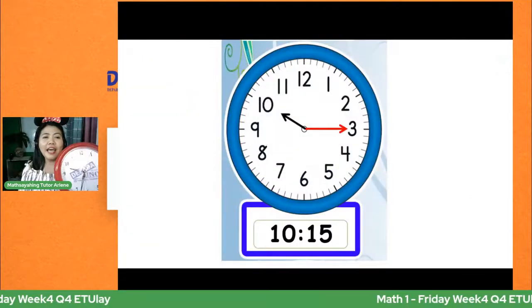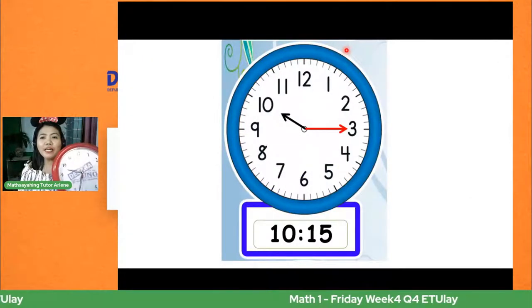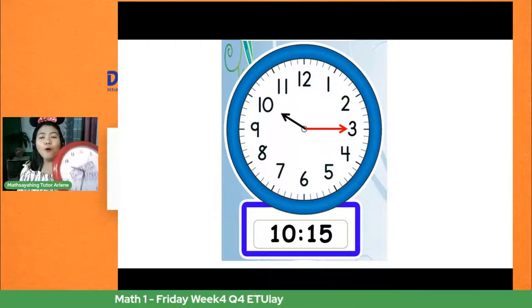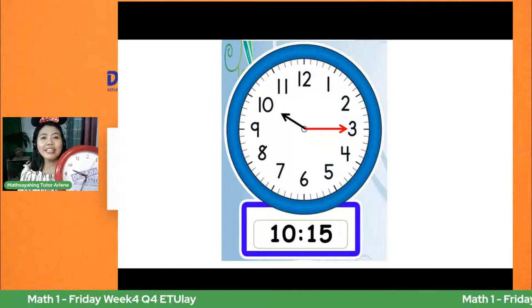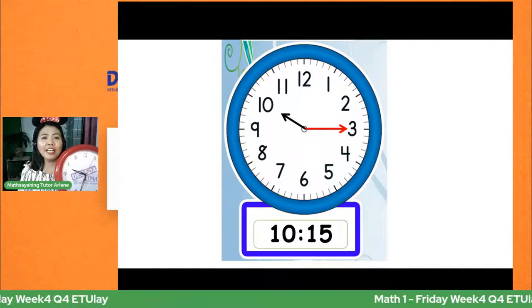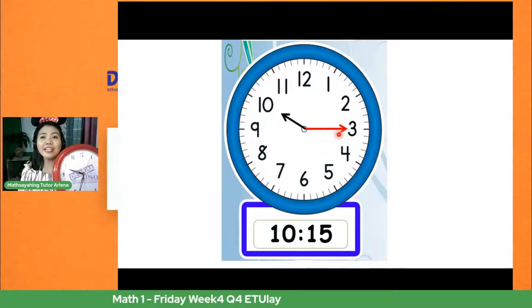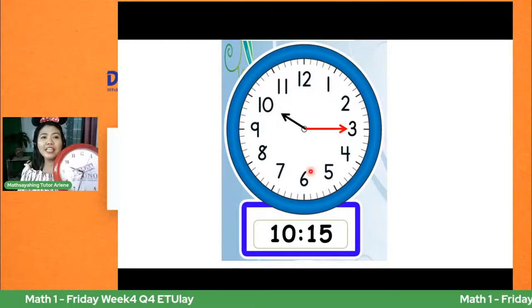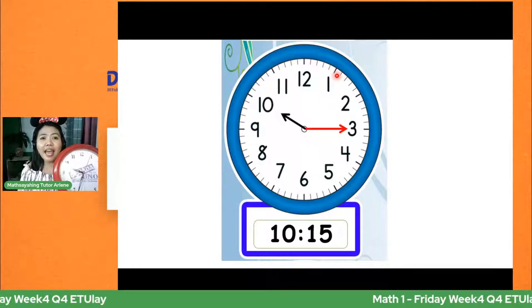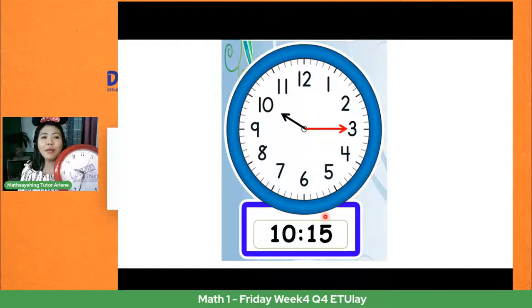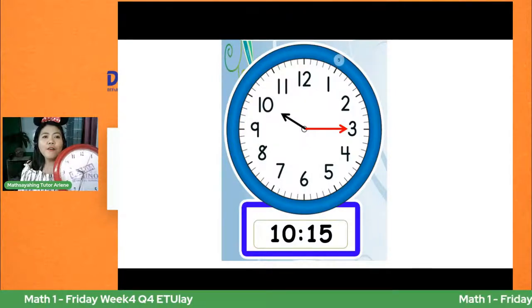Balikan natin. Anong basa natin dun sa one pag ito ay nasa mahabang kamay? Sa pagbabasa ng oras, uunahin natin ang maliit na kamay. Kagaya nito, ang maliit na kamay ay nasa number 10, at ang mahabang kamay ay nasa number 3. Anong basa natin dyan? Babasahin natin siya sa oras — ito ay 10. At sa minuto naman, bibilang tayo: 1, 2, 3, 4, 5 minutes.